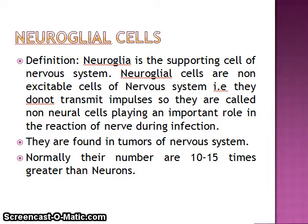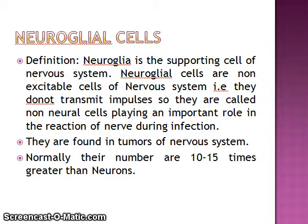Definition. Neuroglial cells are the supporting cells of the nervous system. They are non-excitable cells of the nervous system — that is, they do not transmit impulses. They are called non-neural cells. The excitable cells are neurons, but neuroglial cells do not conduct impulses.